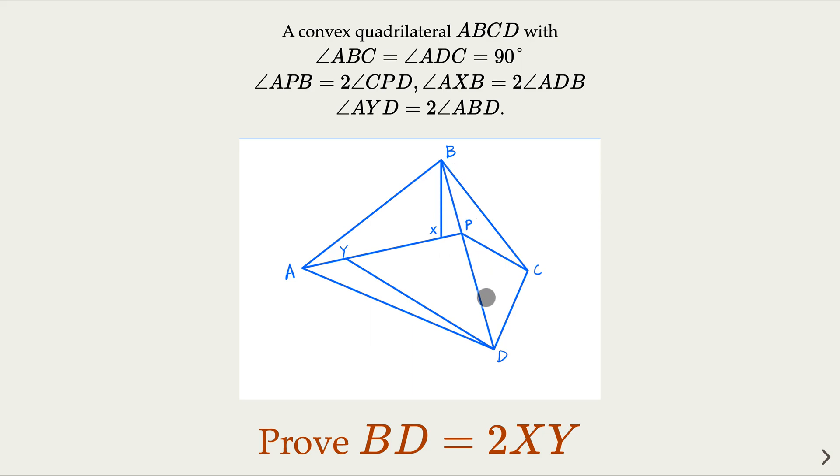Here BD is a diagonal. We have a point P such that angle APB, the bigger one, is twice the smaller one CPD. We have another pair of similar relationships - the bigger angle AXB is twice angle BDA.